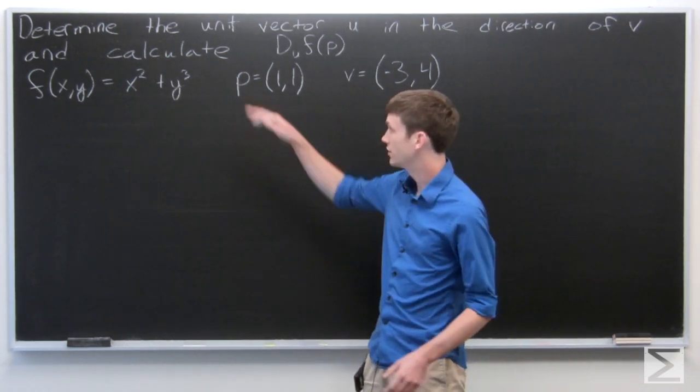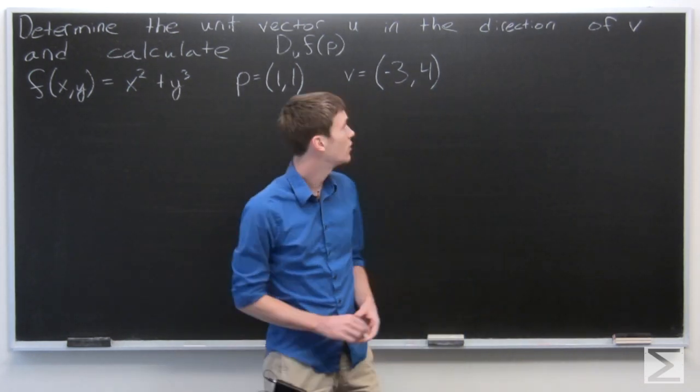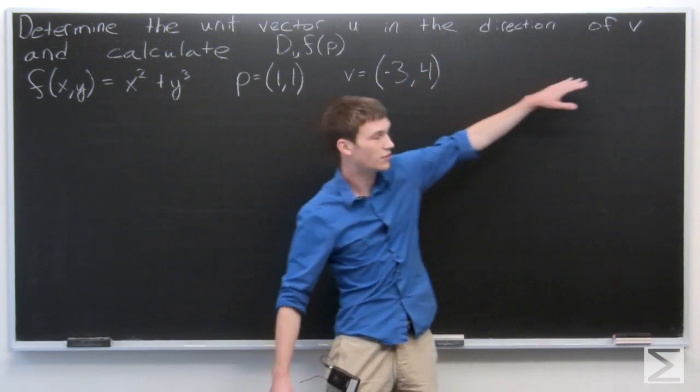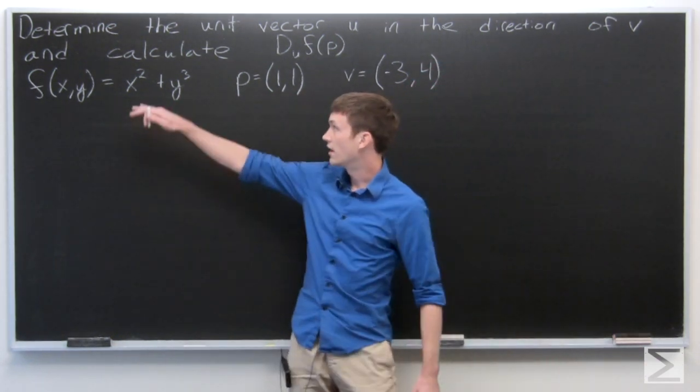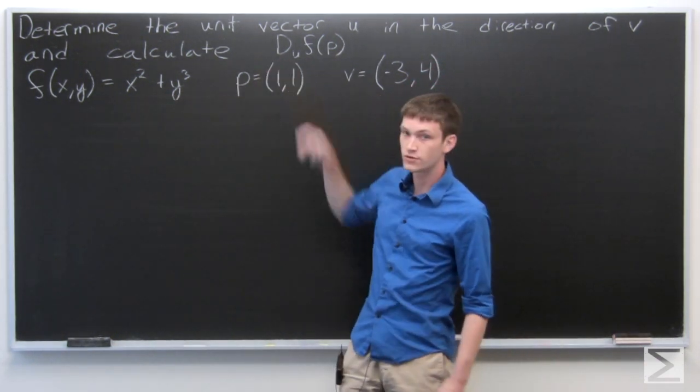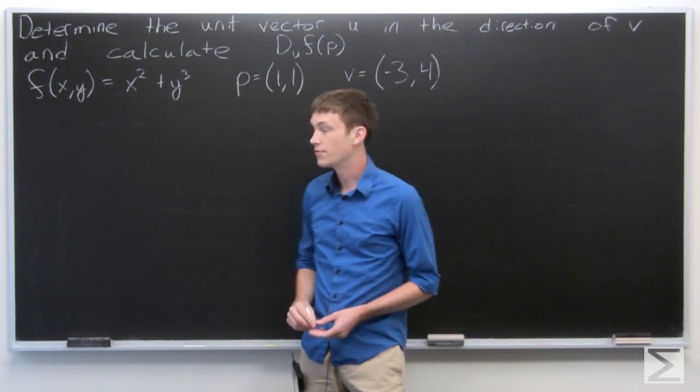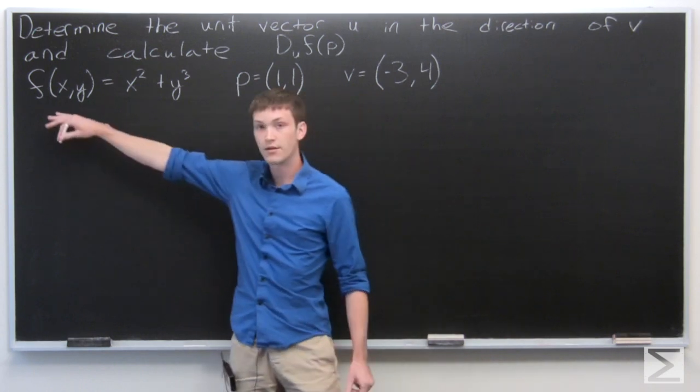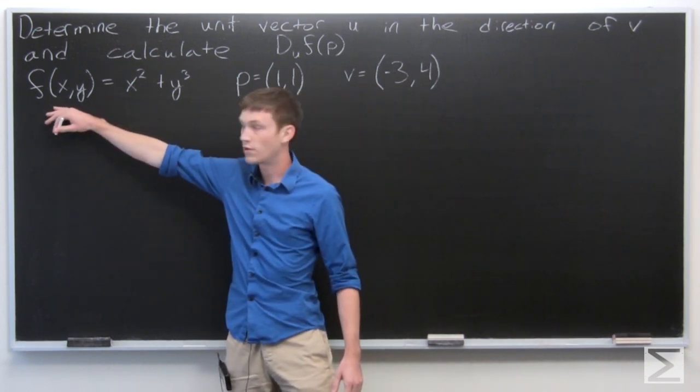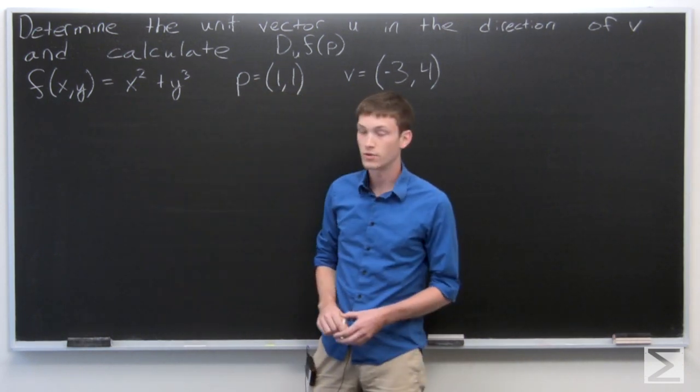In this problem, we're asked to determine the unit vector u in the direction of a vector v and calculate the directional derivative of f at p in the direction of u. We're told that our equation is f of x, y equals x squared plus y squared.